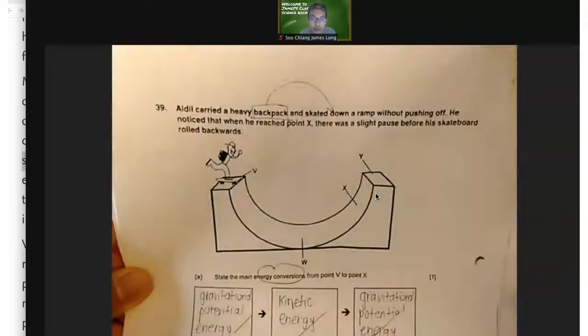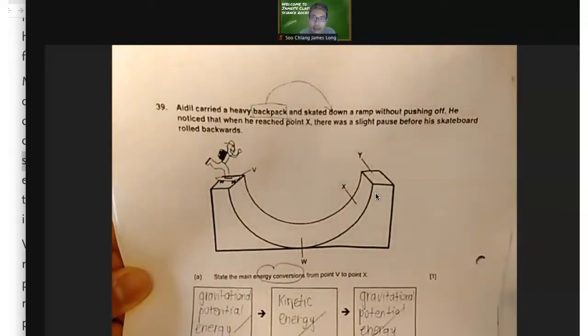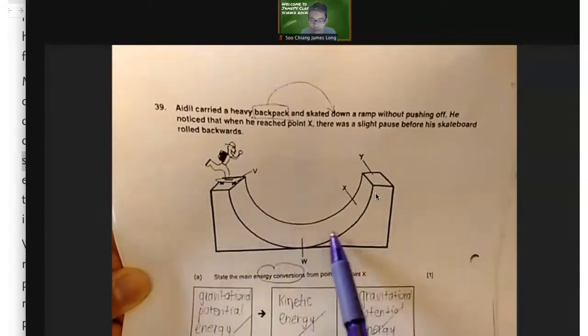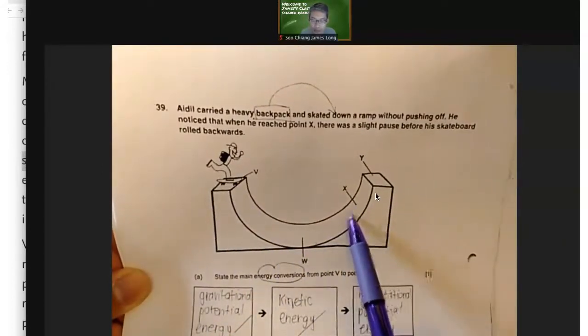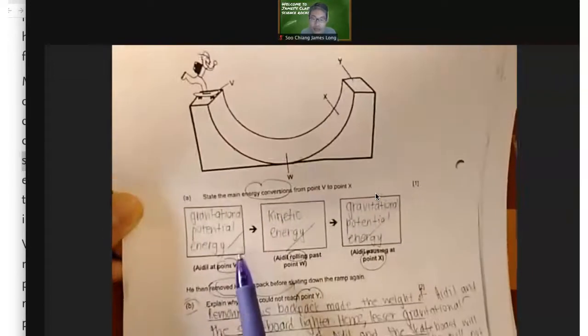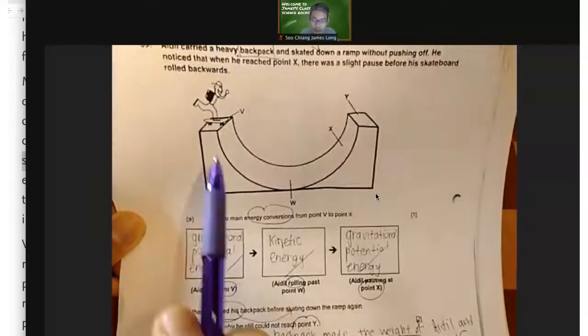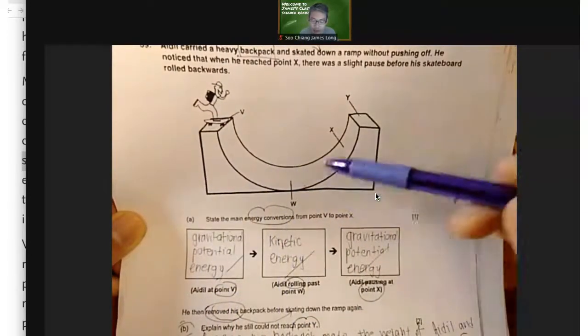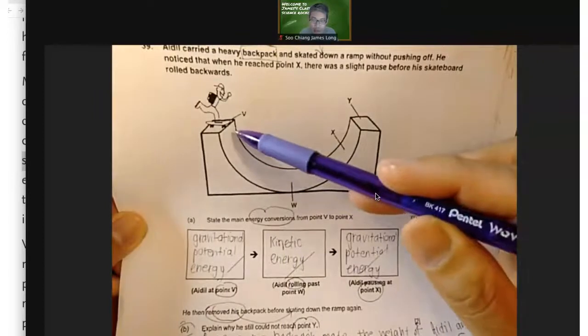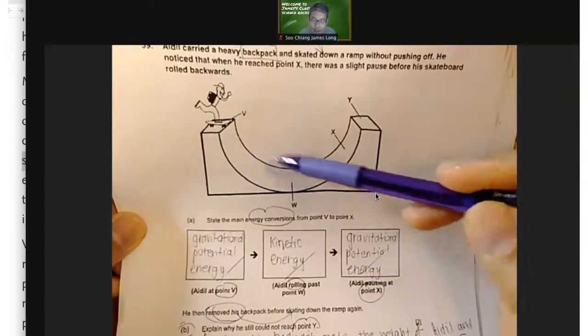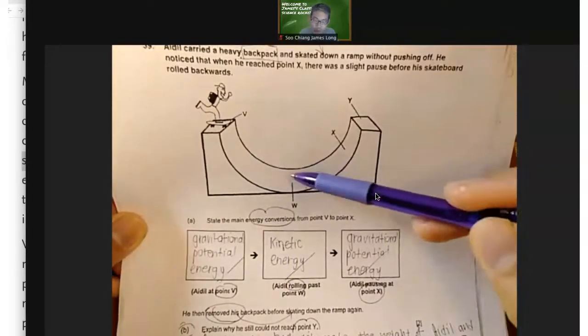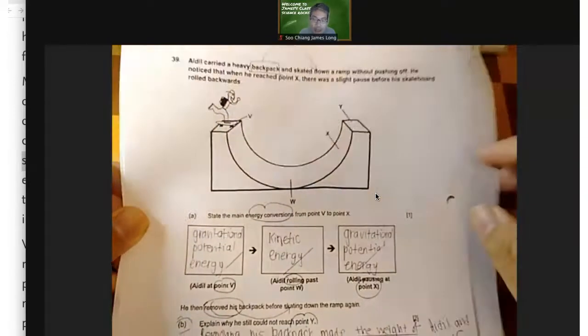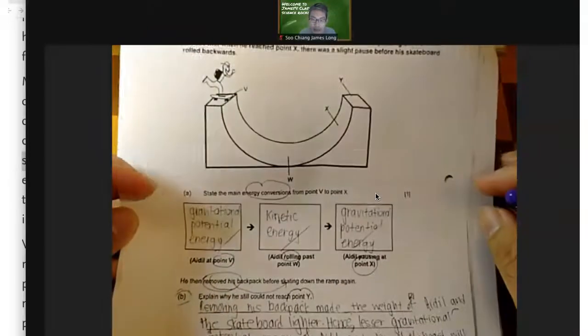Next one. Ideal carries a heavy backpack and skidded down a ramp without pushing off. So he just let gravity pull him down, and he stopped here before rolling back. And he got the energy conversion correct. The GPE in him was converted into KE, which is the point of view. Along the way, there'll be more and more KE, less and less GPE. As it goes up, there'll be less and less KE, more and more GPE. Now then he removed his backpack before skidding down the ramp again.